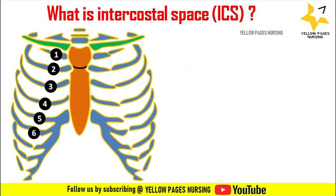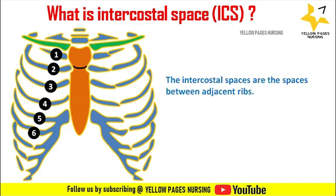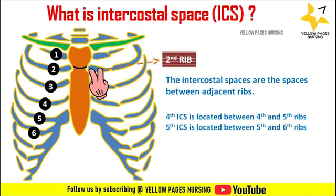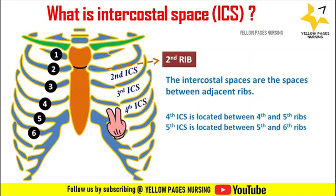Now, how to identify the fourth and fifth intercostal space. The intercostal spaces are the spaces between adjacent ribs. The fourth intercostal space is located between the fourth and fifth ribs, and the fifth intercostal space is located between the fifth and sixth ribs.